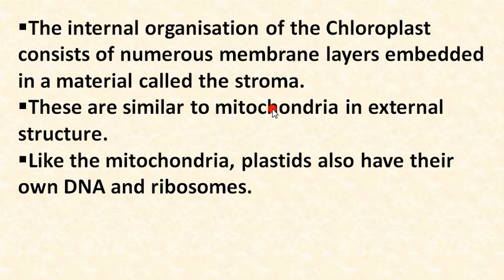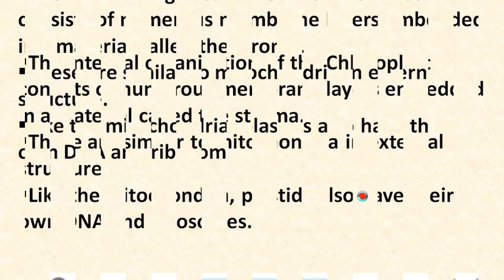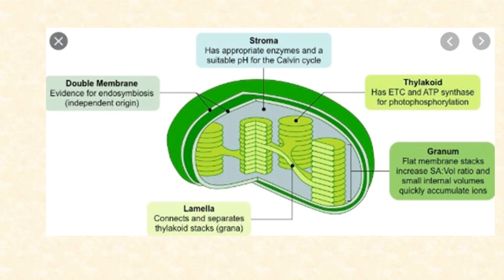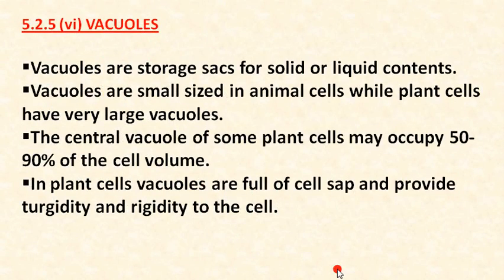Like mitochondria, chloroplasts also have their own DNA and ribosomes. DNA is the inheritance material — deoxyribonucleic acid. So chloroplasts contain their own DNA and ribosomes, just as mitochondria do. The diagram also shows the double membrane, thylakoid, and granum structures.